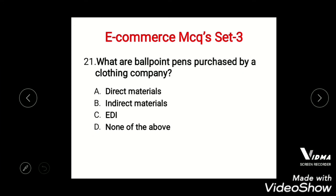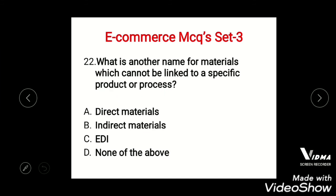Question 19: What is another name for indirect materials — materials which cannot be linked to a specific product or process? Options: A) Direct material, B) Indirect material, C) ADI, D) None of the above. The right answer is option B, indirect material.